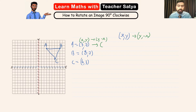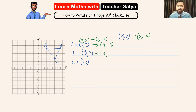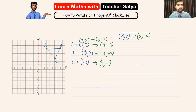So using these ordered pairs — x and y — they will change to y and negative x. For point A at (3, 7): y is 7 and negative x is -3. For point B at (8, 7): y is 7 and negative x is -8. For point C at (6, 3): y is 3 and negative x is -6. We have now found the ordered pairs for the image of the original shape.